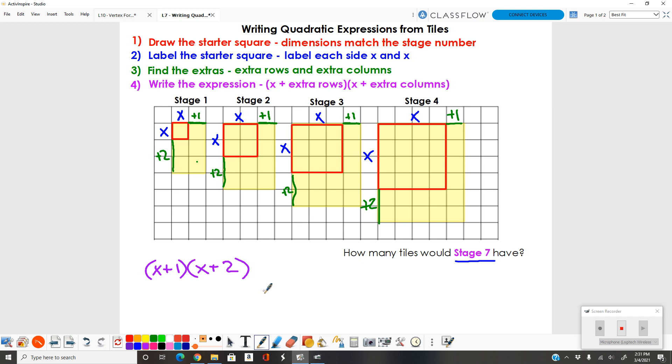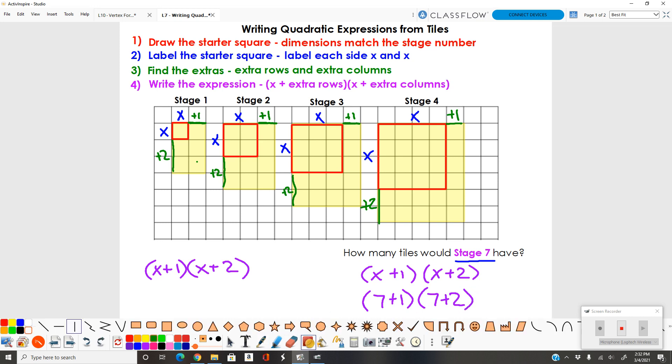To show you this, I'm going to find how many tiles or what the area would be for stage 7. What I would do is I'm going to take this equation, x plus 1 times x plus 2, and I'm going to substitute this 7 in for x. I've got 7 plus 1 times 7 plus 2. Here's why we do this.